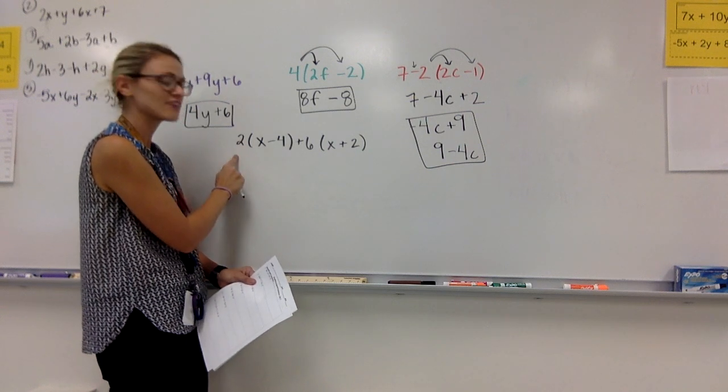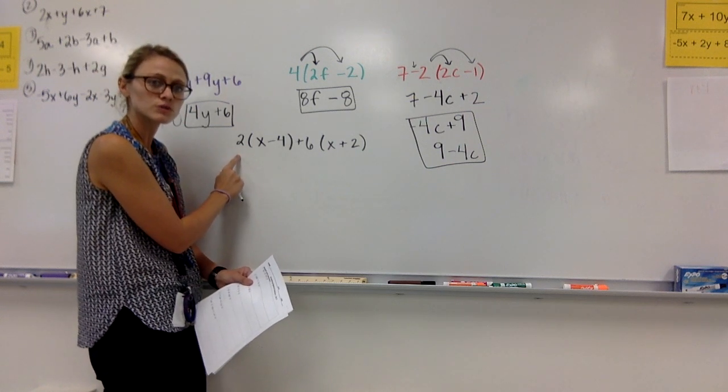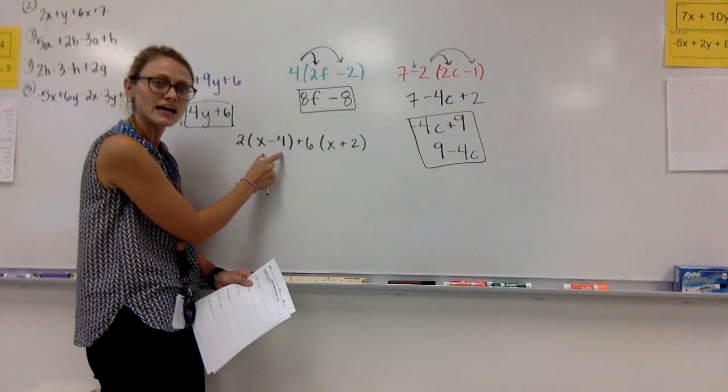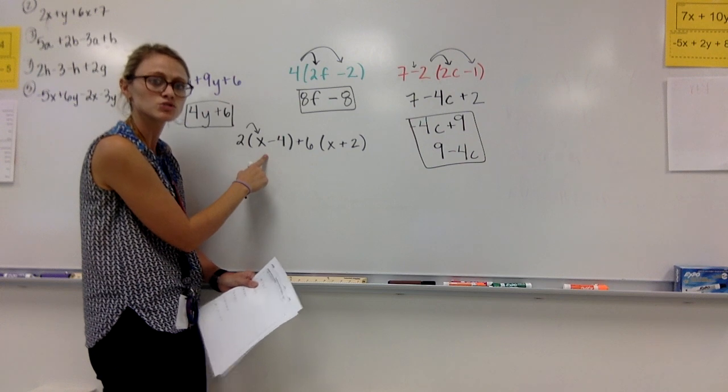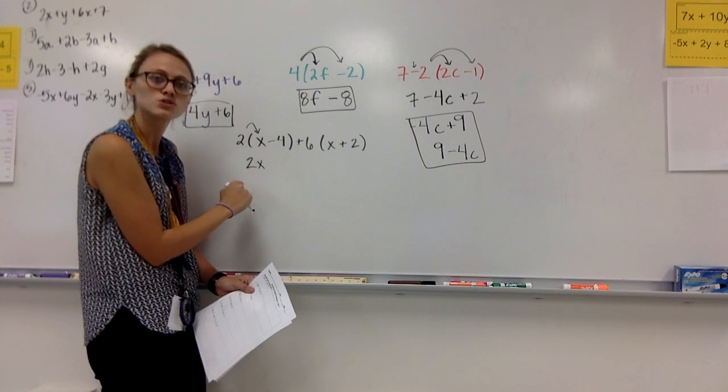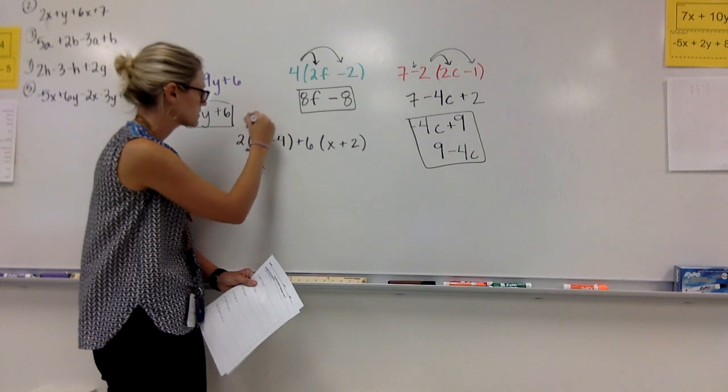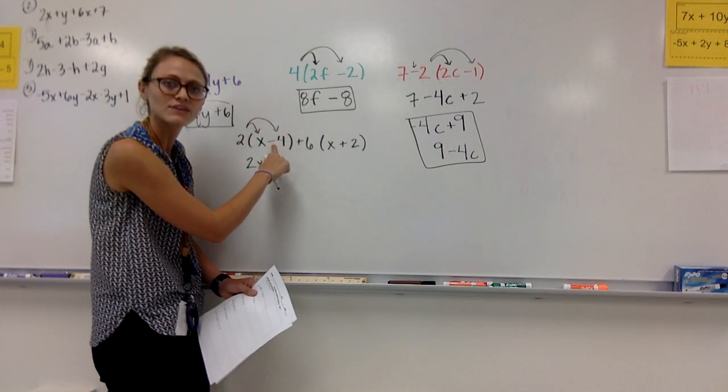Outside of this parentheses, I have my 2. I have to distribute that 2 to the inside. 2 to the x. 2 times x is 2x.